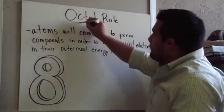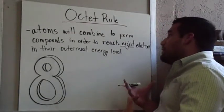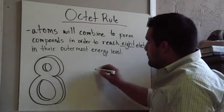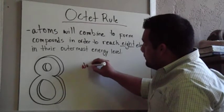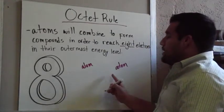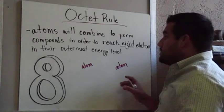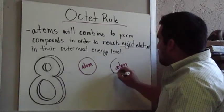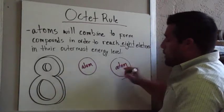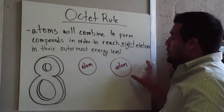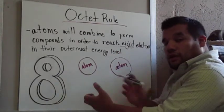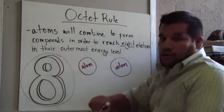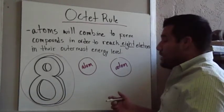The octet rule. The octet rule is that atoms will combine to form compounds in order to reach eight electrons on their outermost energy level. So we have an atom here and an atom here, and these two want to bond together to make sure that they have eight electrons on their outermost energy level. They're going to either gain or lose electrons, or they're going to share electrons, so they have eight on the outermost energy level. Eight is the magic number — we want to make sure that we have eight electrons on that outermost energy level.